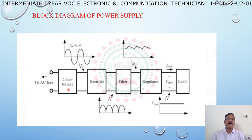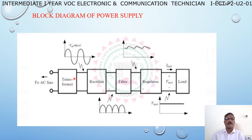The first block is the transformer. Generally in electronics, most electronic appliances use a step-down transformer, which gives the required lower voltage output, also in the form of AC.